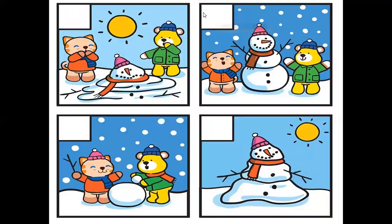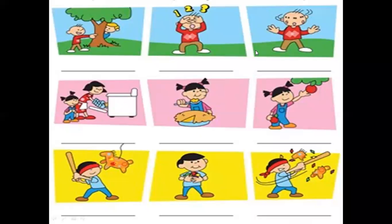Come to next. See, children — which one comes first? Yes, they are making a snowman — that is first. See, during sun time, summer, the snow is melting — so that is first. Then second. Then third. Then again, they are making the snowman properly — so that is four.